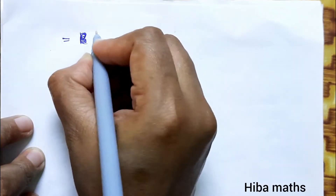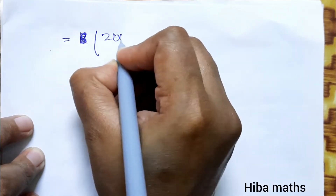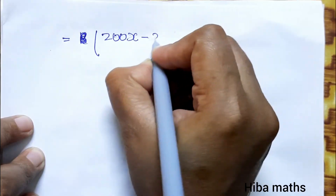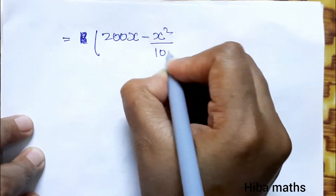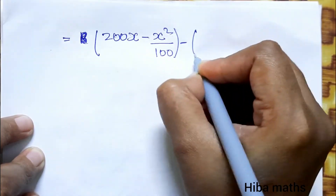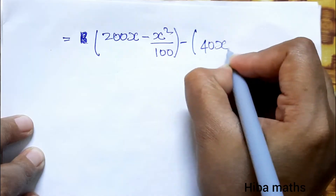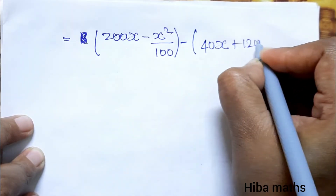So R = 200x - x²/100. Now we subtract C, where c = 40x + 120.